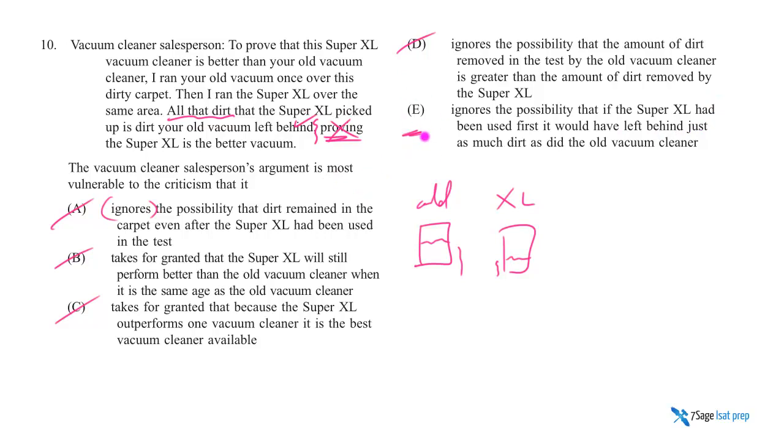Ignores the possibility that if the XL had been used first, if we just flip the order around, that it would have left behind just as much dirt as the old one did. That's right. If your argument, salesperson, is that just because dirt was left behind for a second vacuum to pick up, which that is your argument...